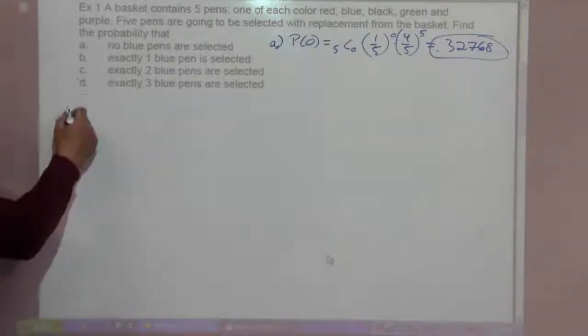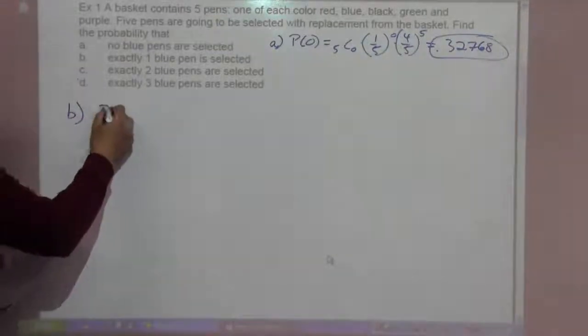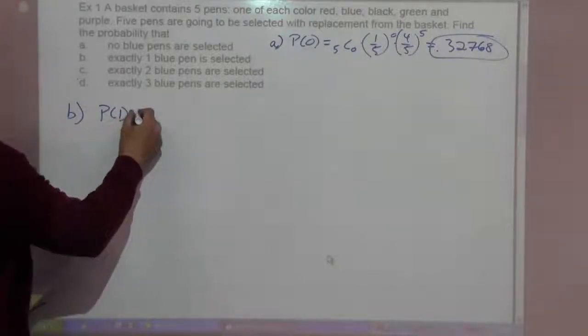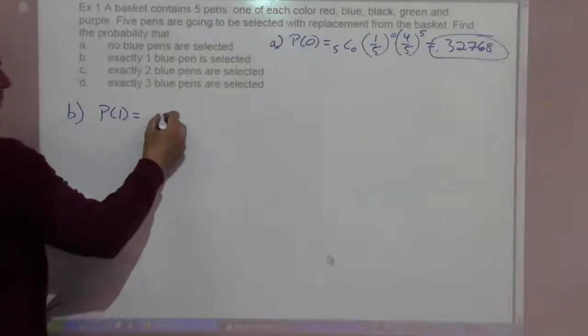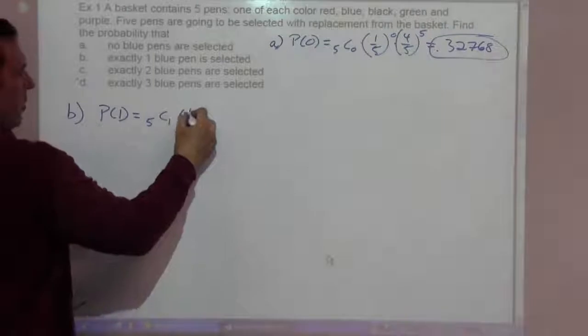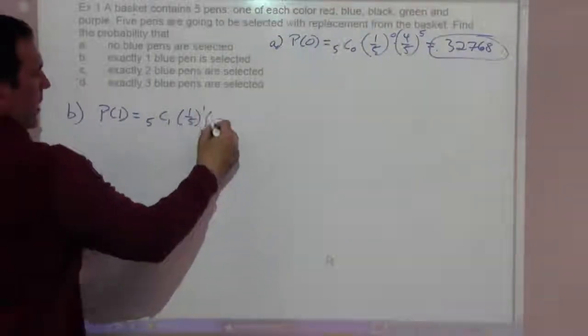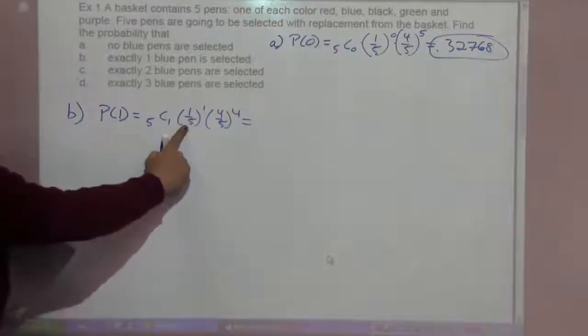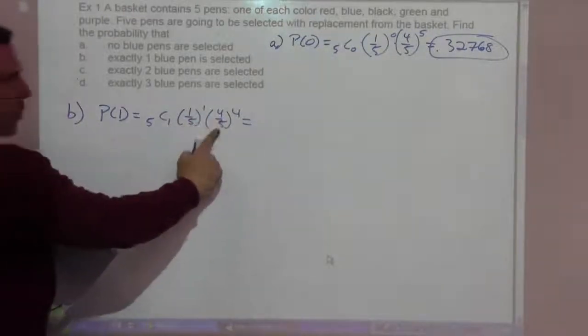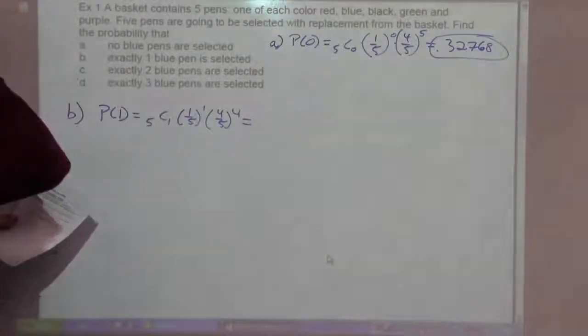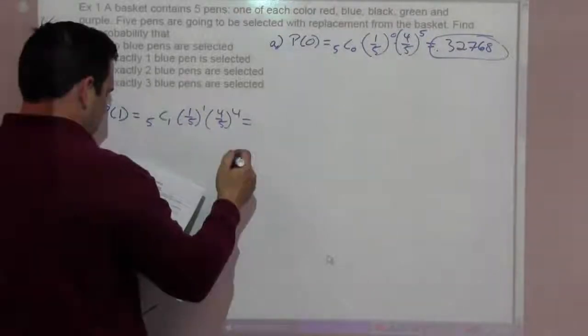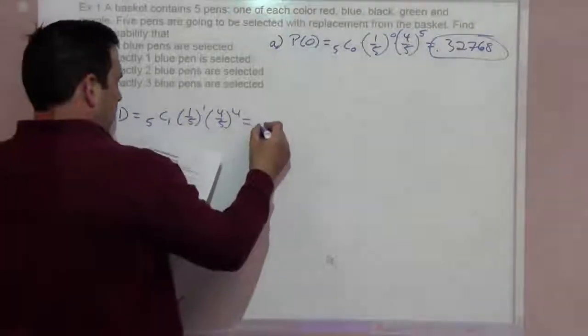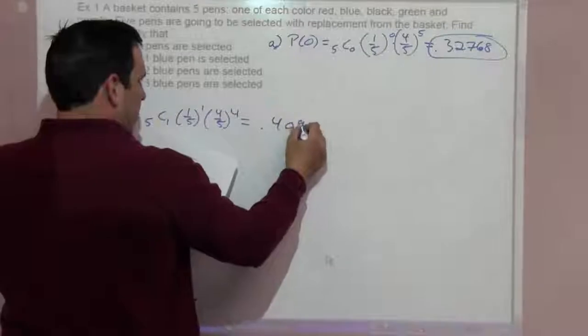What's the probability of exactly one blue pen? The probability of one is five choose one times one-fifth to the one power, times four-fifths to the four power. One time you're getting the blue pen, four times you're not getting the blue pen. That's .4096.